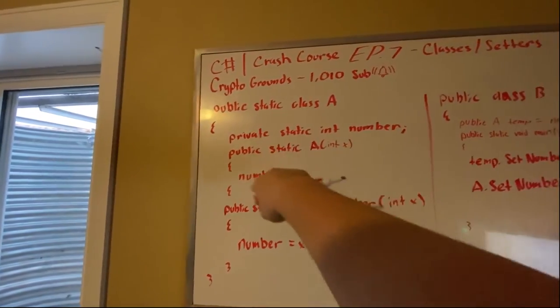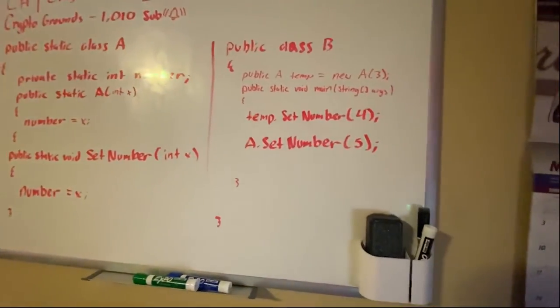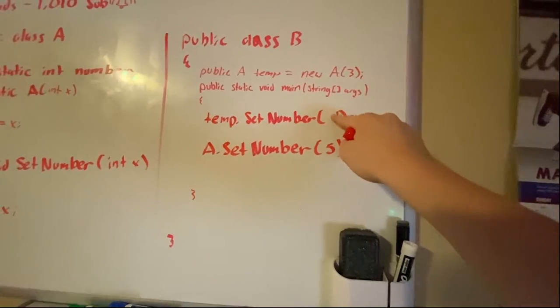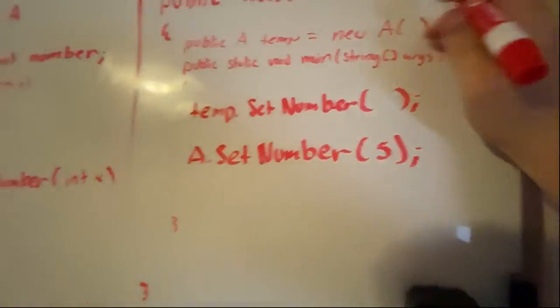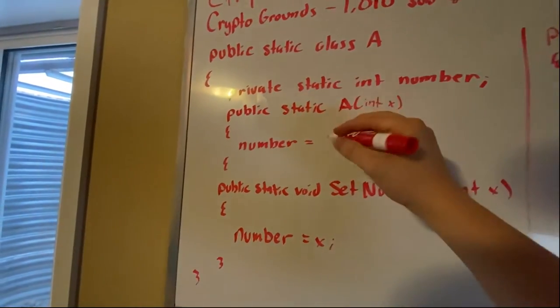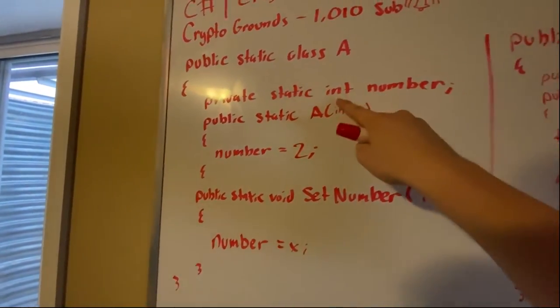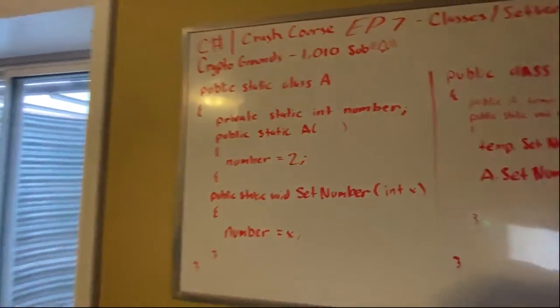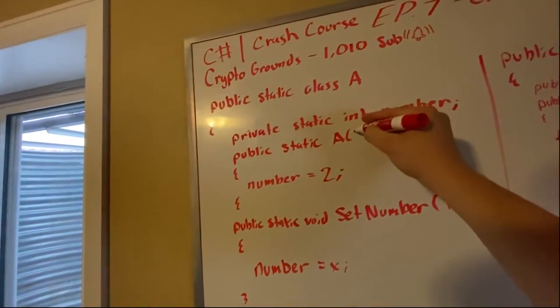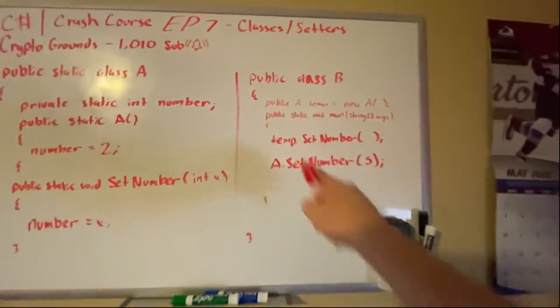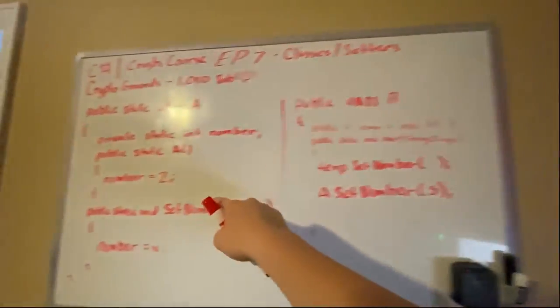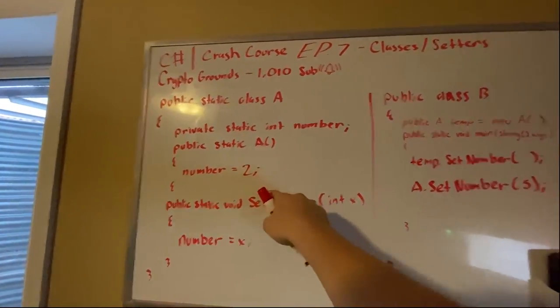So if we didn't have this at all and we didn't have this constructor, let's clear this. Let's clear that too, let's make this 2, let's get rid of that. So let's say it looks like this. If we create this right now, number will be 2.